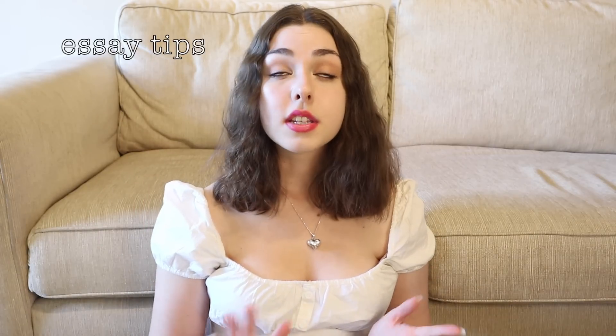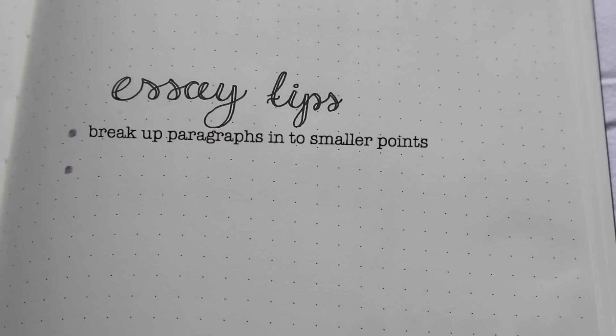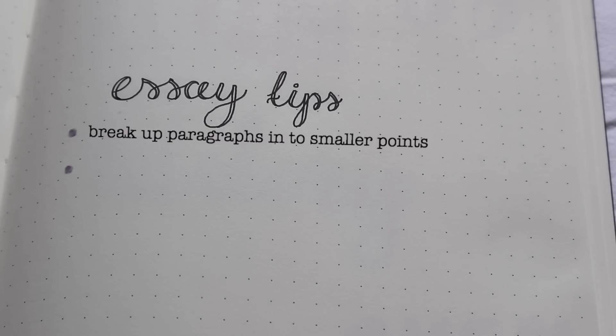Another spread that would be super useful is a master list of essay tips — like a glossary that you can flip to at the back of your book. Every time you get an essay tip, whether from meetings, class, tutors, lectures, referencing style guidelines, or feedback from previous essays, you write those tips in one list. Then when you're writing an essay you can look over them and know what to do better.